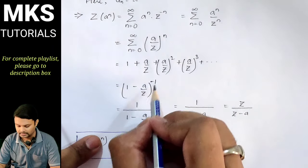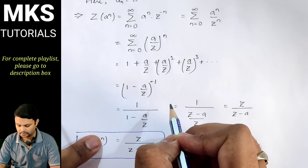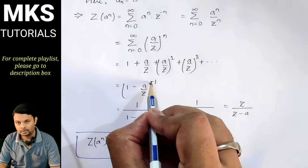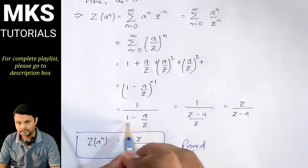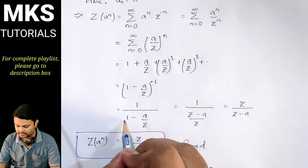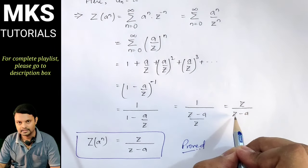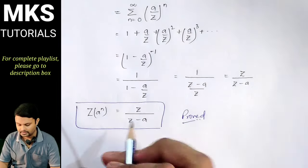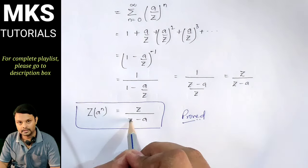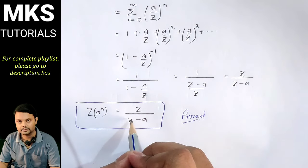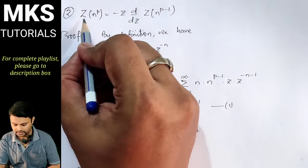Using the binomial formula, summation n equal to 0 to infinity of x^n equals 1 minus x to the power minus 1, where x is a upon z. So this becomes 1 minus (a/z) to the power minus 1, which equals 1 upon (1 minus a/z), which simplifies to z upon (z minus a). Therefore, Z-transform of a to the power n equals z upon z minus a.